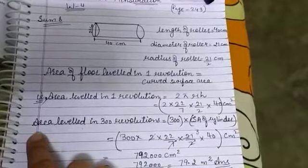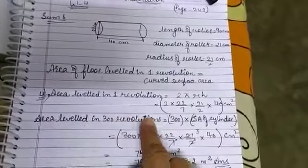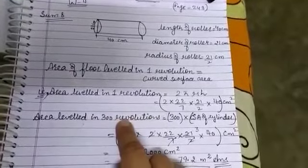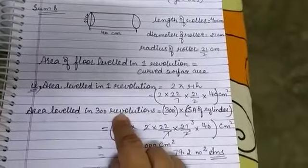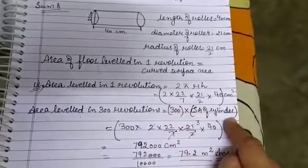But according to the statement, the roller has completed 300 revolutions to level the ground. So in 300 revolutions, the area leveled is equal to 300 multiplied by the curved surface area.